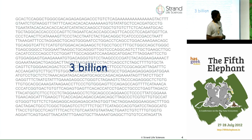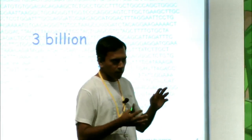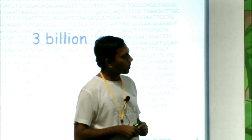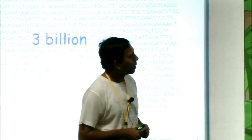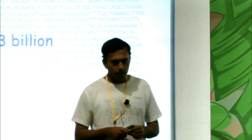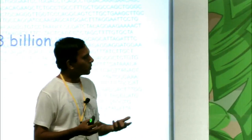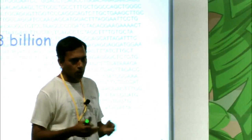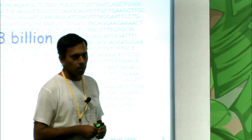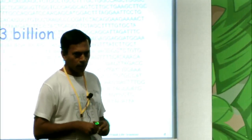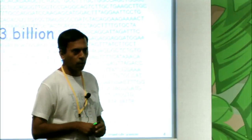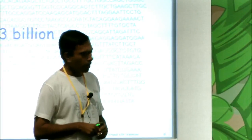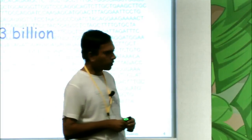We know that much, but unlike computer programs where we can look at big chunks and big functions and say 'this is what it does,' our ability to understand this program at a high level is still very primitive. This program is exceedingly long — 3 billion characters — and the challenge is that even a program of a couple of hundred thousand lines would be difficult to understand, and here we know much less.